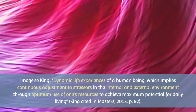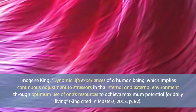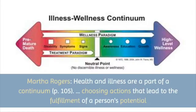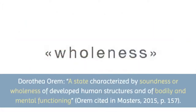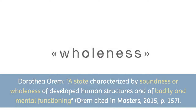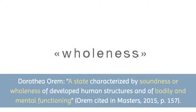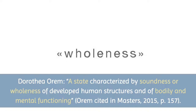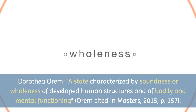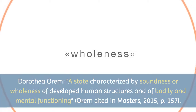There's a lot of information in King's definition — you can pick it apart to see how she believed health was achieved. Martha Rogers was all about energy and patterns, saying that health and illness are part of a continuum and that choosing actions that lead to the fulfillment of a person's potential were part of this health definition. Dorothea Orem said that health was a state characterized by soundness or wholeness of developed human structures and of bodily and mental functioning.